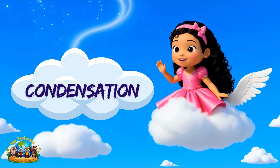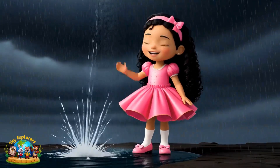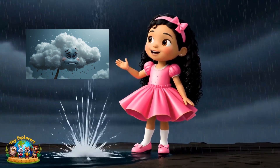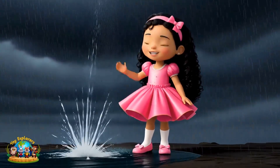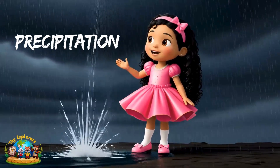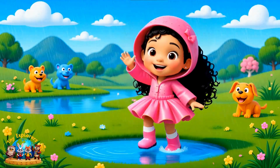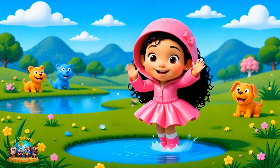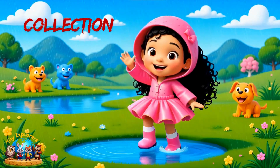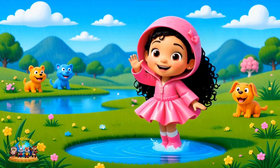The clouds are getting full. But when there's too much water inside the clouds, guess what happens? That's right, the clouds get too heavy, and the water falls down as rain. This part is called precipitation. Big word, right? After the rain falls, the water goes back to rivers, lakes, and oceans. That's called collection. And then the sun starts warming it again, and the whole water cycle starts all over again.